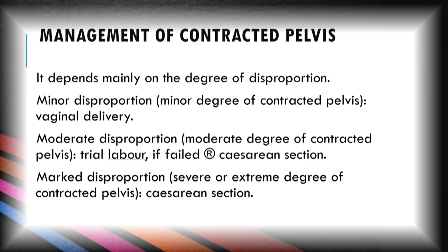Management of contracted pelvis depends mainly on the degree of disproportion. In minor disproportion (minor degree), vaginal delivery can be attempted. In moderate disproportion (moderate degree), trial of labor is recommended; if it fails, cesarean section is performed. In marked disproportion — severe or extreme degree of contracted pelvis — only cesarean section is opted.